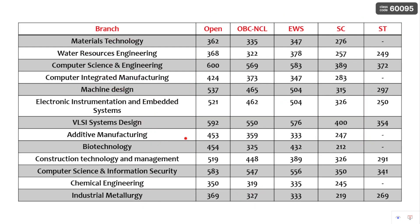Moving to the second slide, other branches include Materials Technology and Water Resource Engineering from Civil Engineering. CSE — one of the most demanded branches — has an open cutoff of 600, OBC Non-Creamy Layer 569, EWS 583, SC 389, and ST 372. Machine Design, another top demanded branch, has a cutoff score of 537.